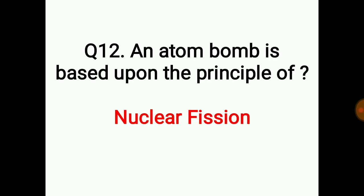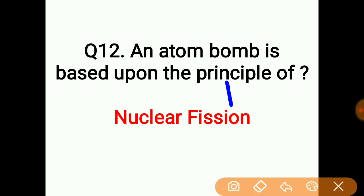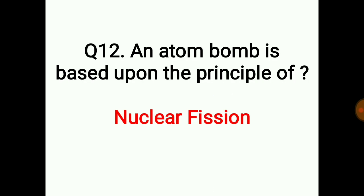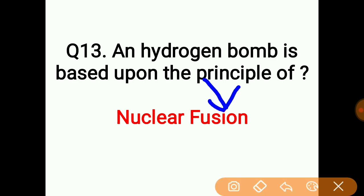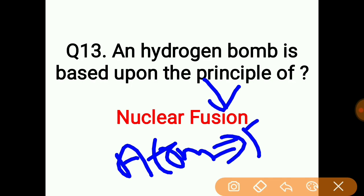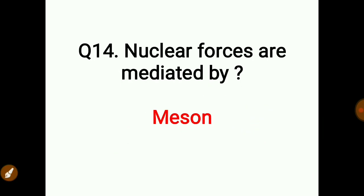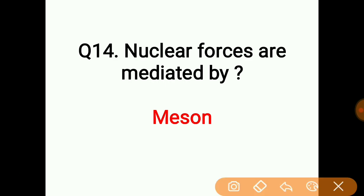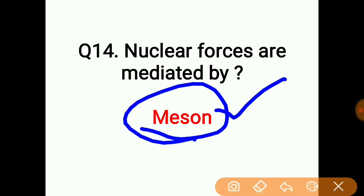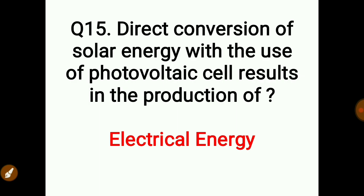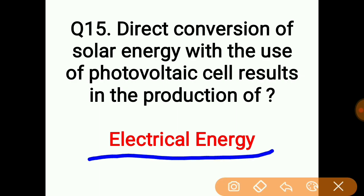The atom bomb is based on the principle of nuclear fission and the hydrogen bomb is based on nuclear fusion. Nuclear forces are mediated by meson particles. Direct conversion of solar energy using a photovoltaic cell results in the production of electrical energy.